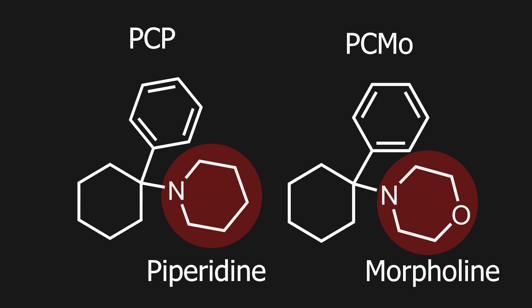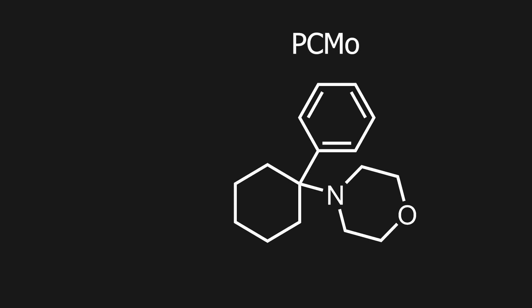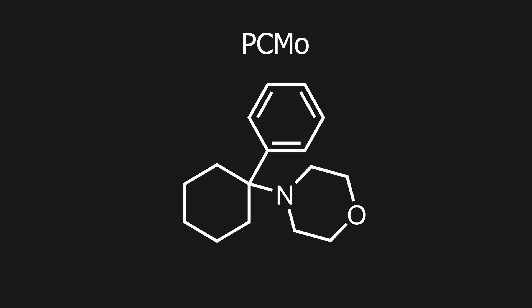After law enforcement started cracking down on PCP manufacturing, limiting precursors like piperidine, clandestine chemists dug up old patents and discovered, along with many other derivatives, PCMO as a prominent replacement.